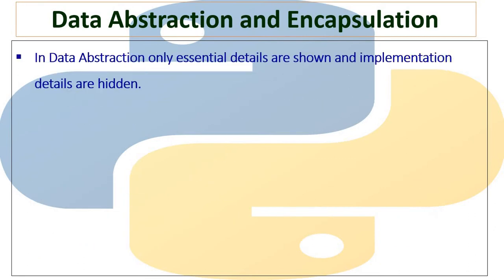Data abstraction gives details of only what is required, and the actual implementation is hidden from the user. For example, with a TV set it is possible to switch it off, switch it on, change the channels, increase or decrease the volume. We can execute these functions easily, but we don't know how these technologies are implemented in the background. This is data abstraction — for example, a television or DVD player: we can use them easily, but we don't know the implementation details.